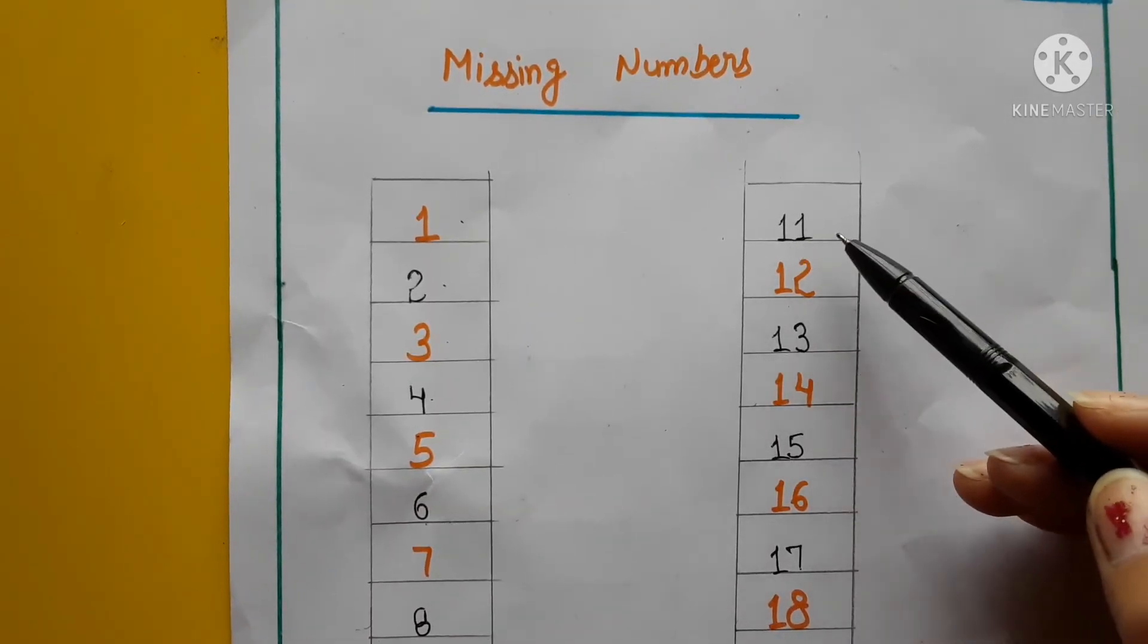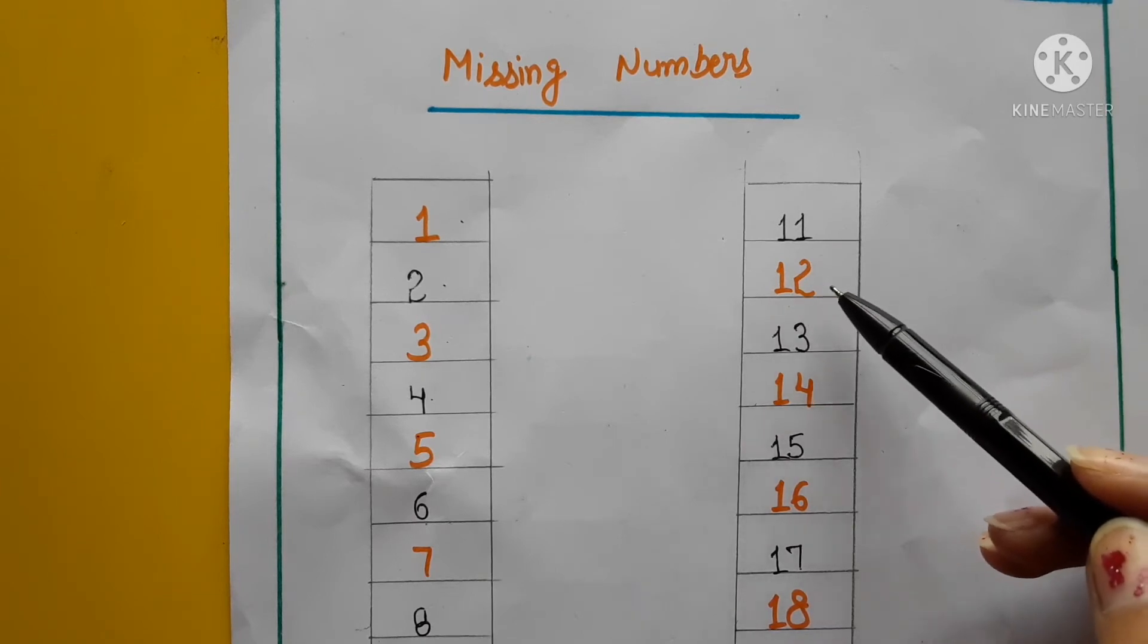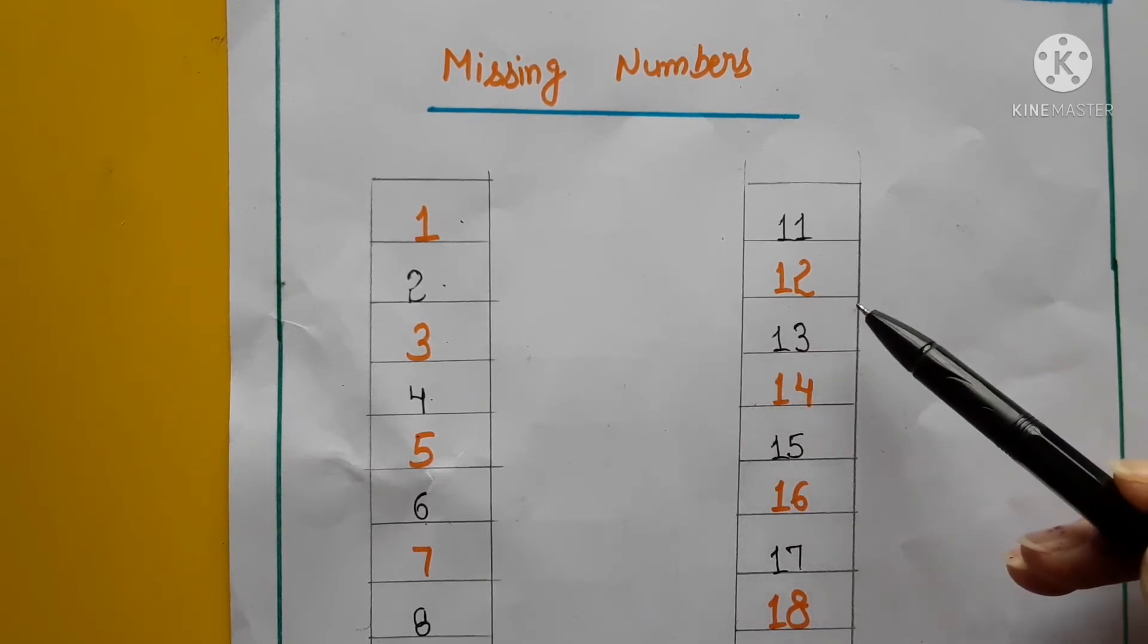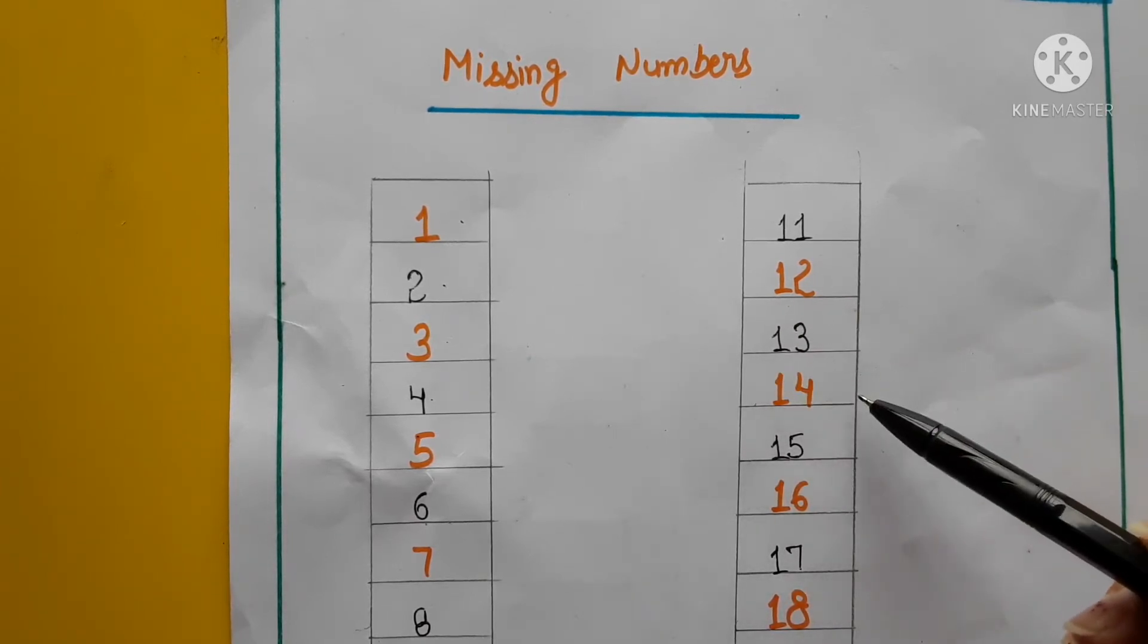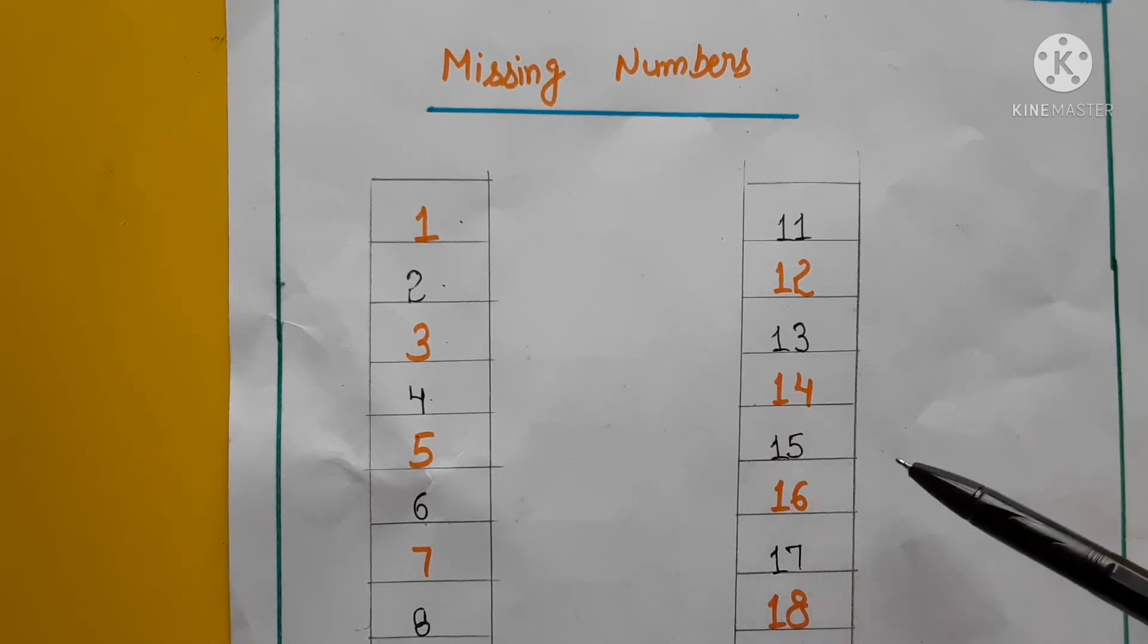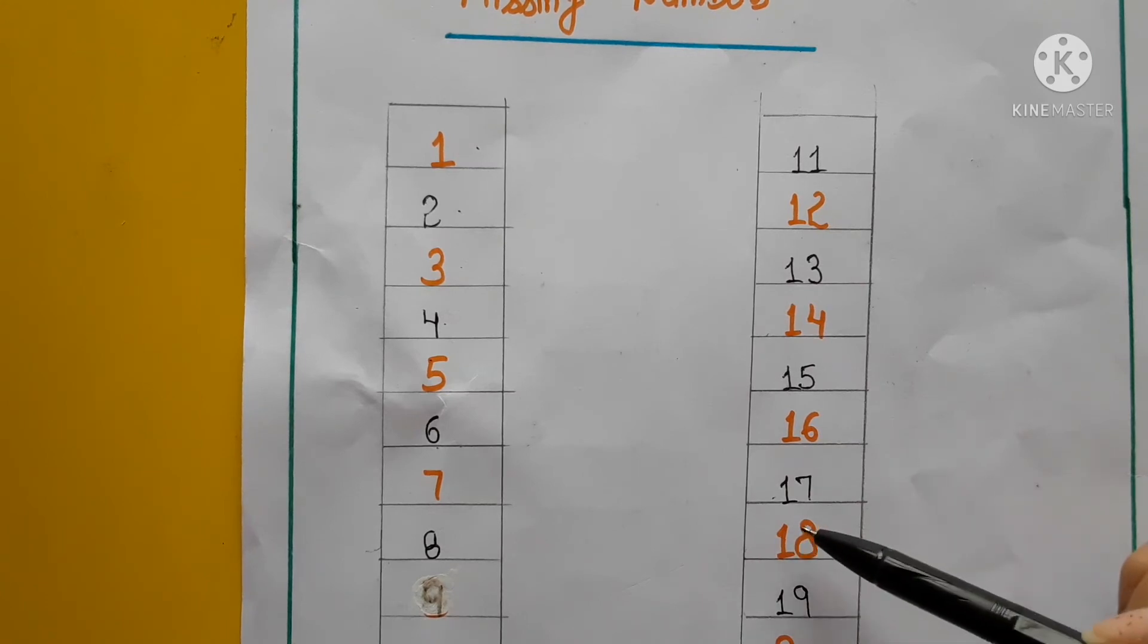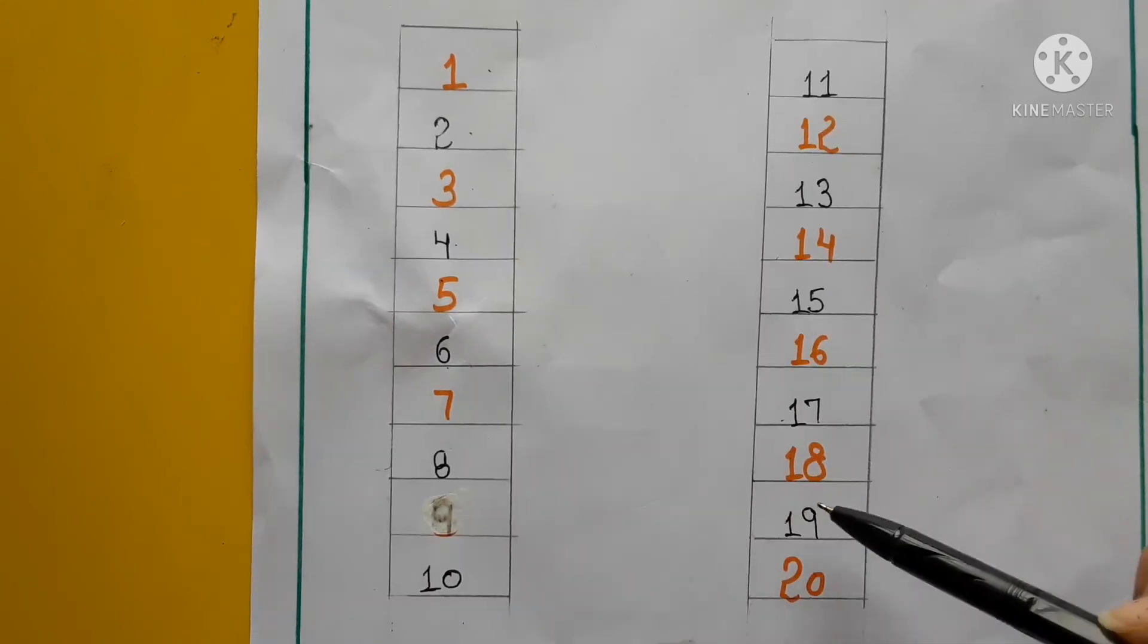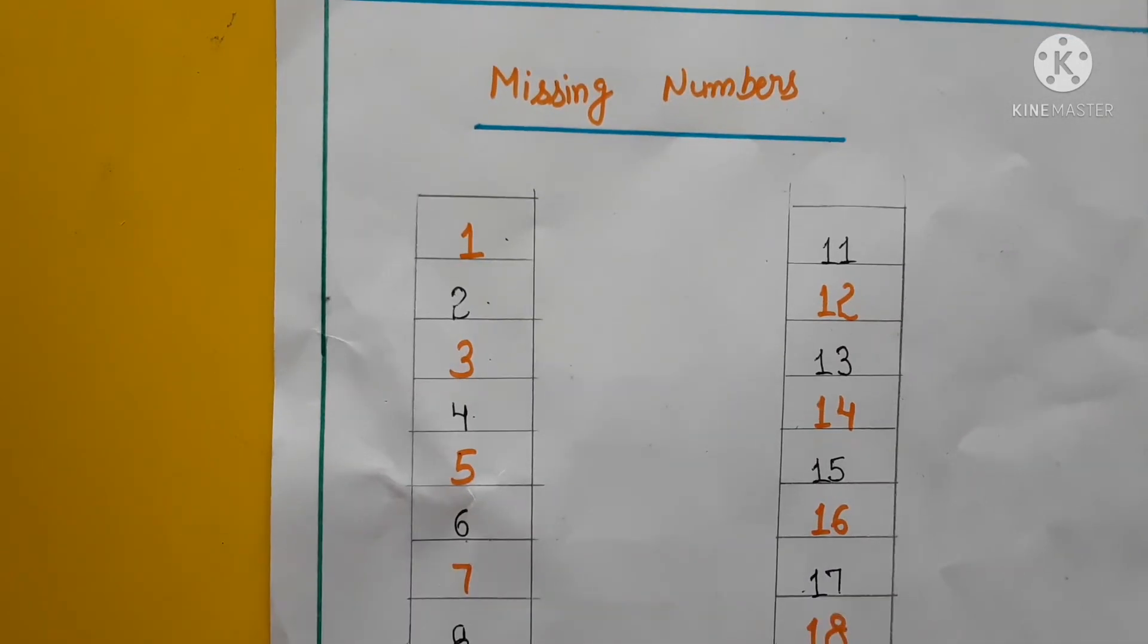1, 1, 11. 1, 2, 12. 1, 3, 13. 1, 4, 14. 1, 5, 15. 1, 6, 16. 1, 7, 17. 1, 8, 18. 1, 9, 19. 2, 0, 20. Theek hai?